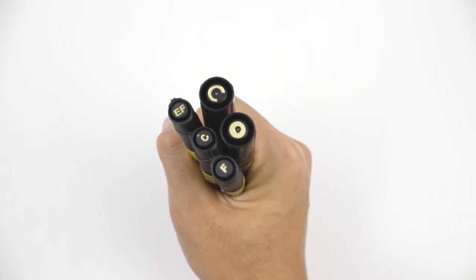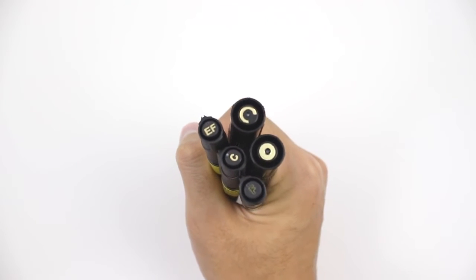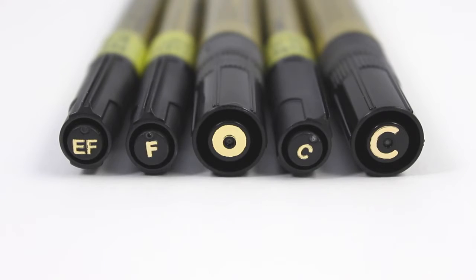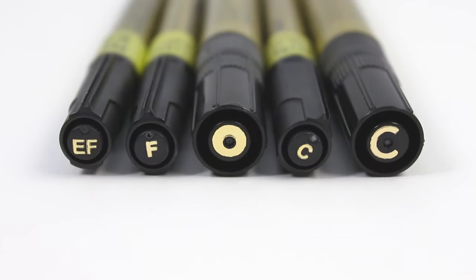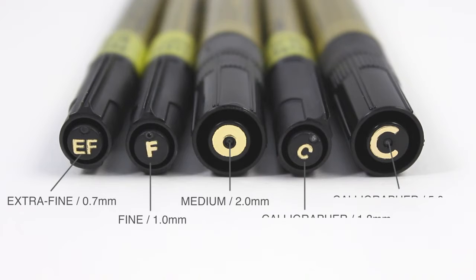The letter on top of each cap helps identify the type of nib you're using. It is also the first thing you see in our Pentouch display available at various art supply stores. The F and EF stand for fine and extra fine, and the C stands for calligrapher.